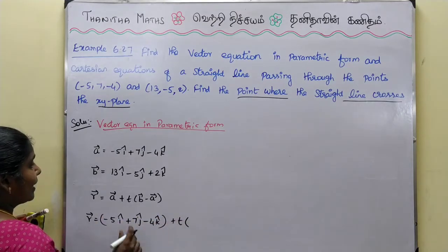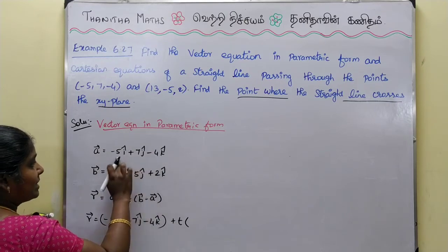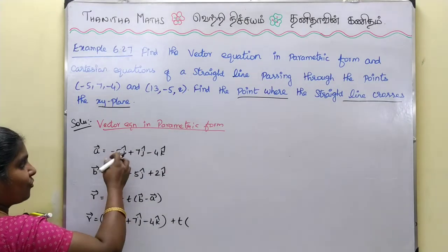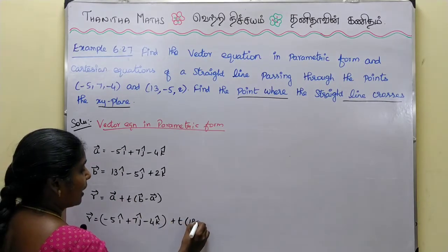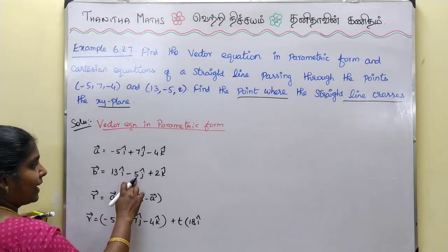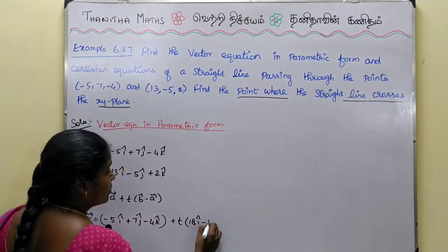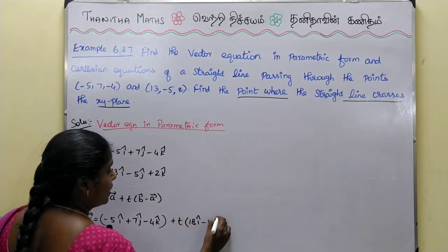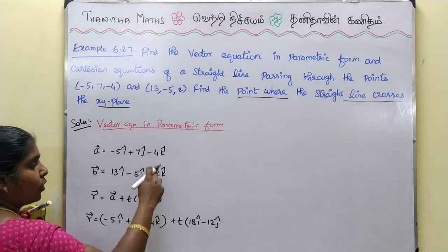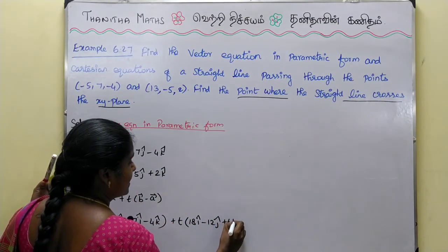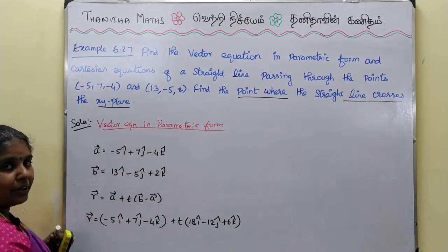t into B vector minus A vector. Here we change the sign. 13 plus 5 is 18, so 18i cap. And minus 5 minus 7 is minus 12, so minus 12j cap. And 2 plus 4 is 6, so plus 6k cap. This is the vector equation in parametric form.